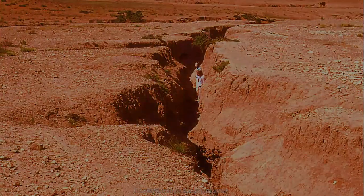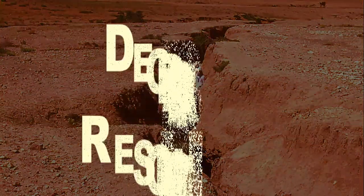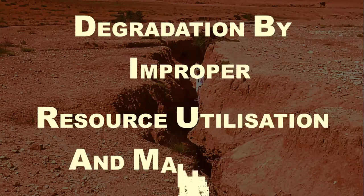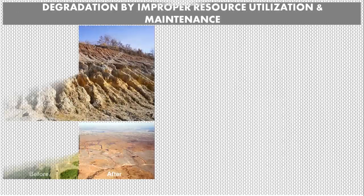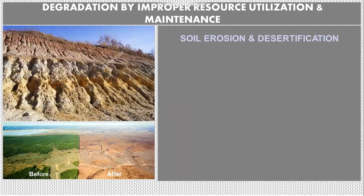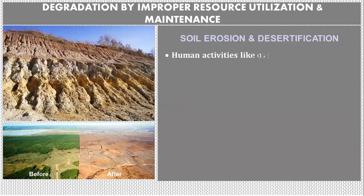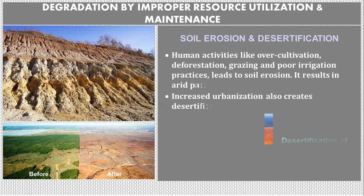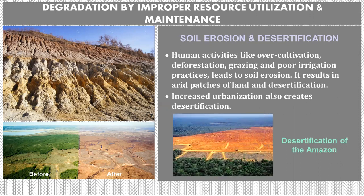Moving next to degradation by improper resource utilization and maintenance. Number one is soil erosion and desertification. Human activities like over-cultivation, deforestation, overgrazing, and poor irrigation practices lead to soil erosion. This results in arid patches of land and desertification.